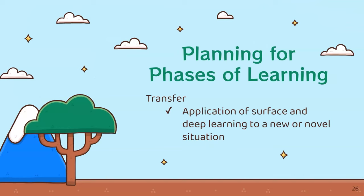Now we're planning for the transfer phase of learning — this is the application of surface and deep learning to a new or novel situation. Transfer can be similar in context to what you've already explored with your students, or dissimilar. Going back to the baking analogy: a similar transfer might be using the ingredients we have for another baked good like squares or muffins. A dissimilar example would be making a savory dish using some of the same ingredients and skills, but essentially completely different from baking cookies.